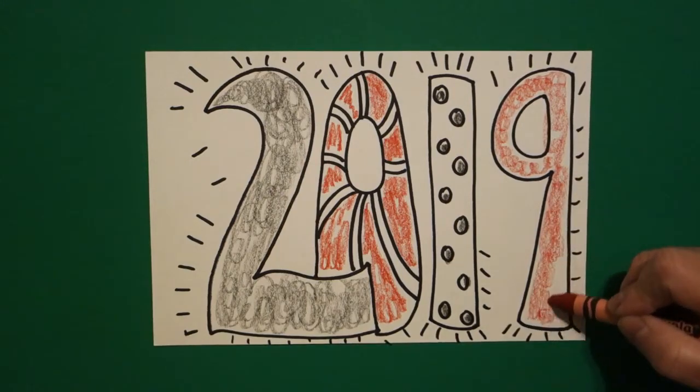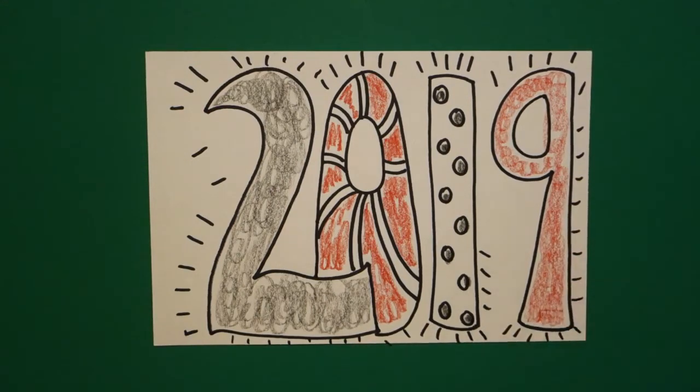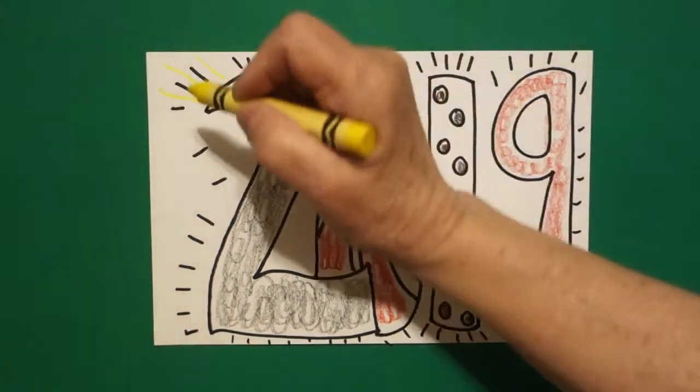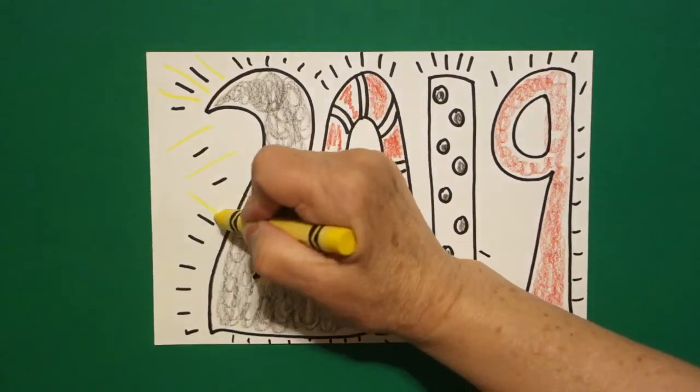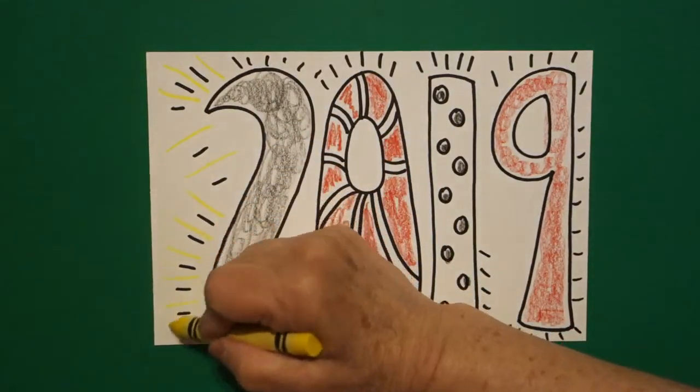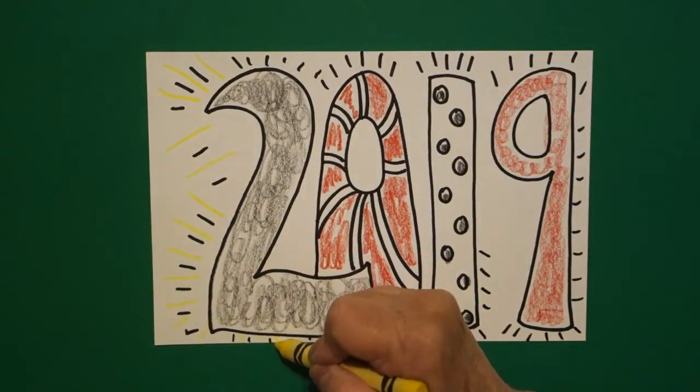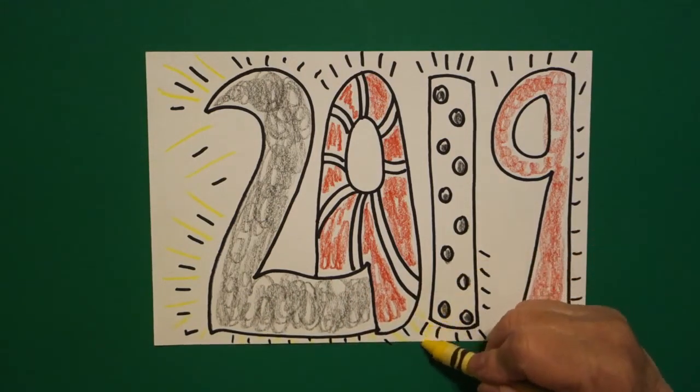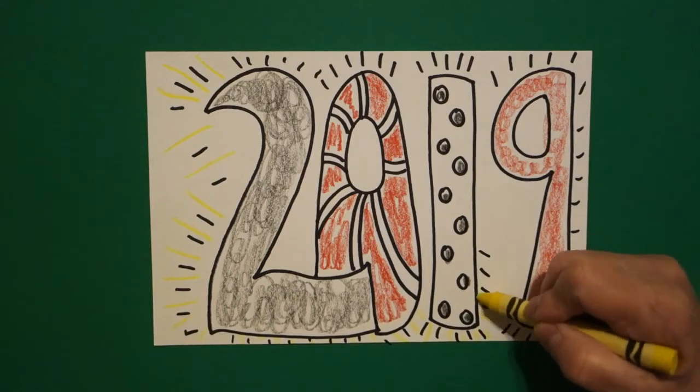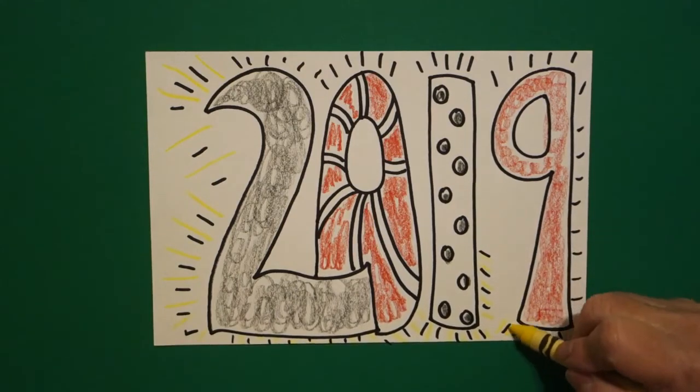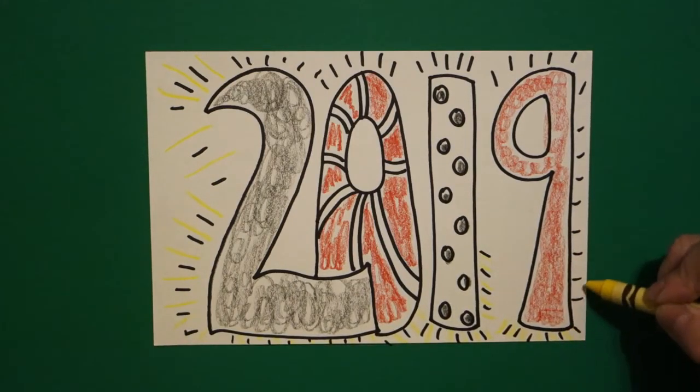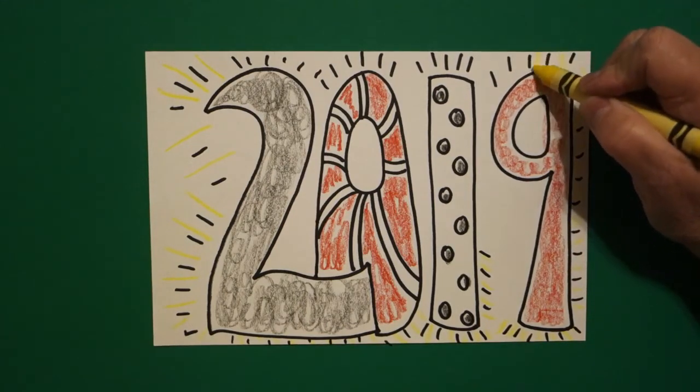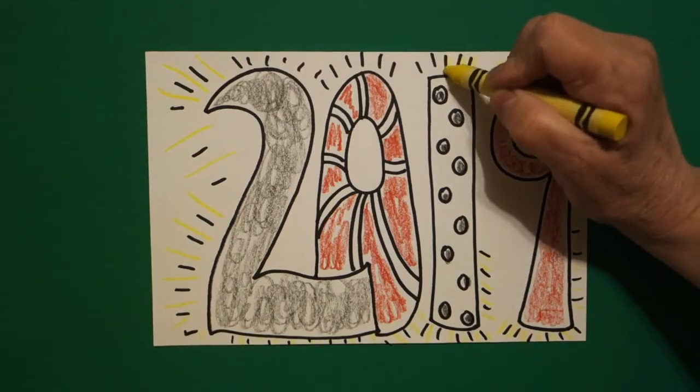Now in order to kind of even make it more spectacular, I took a yellow and wherever I have a black line, I draw a yellow line. Now everybody's is going to look a little bit different, which is okay. We are all artists. This just gives you another pop of color for your New Year's 2019 drawing.